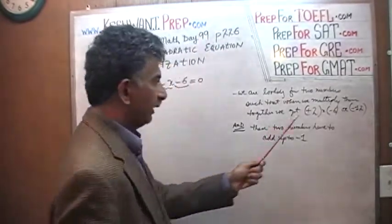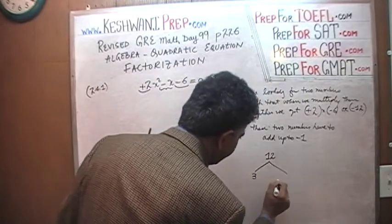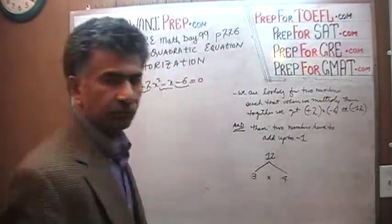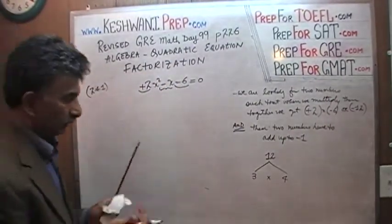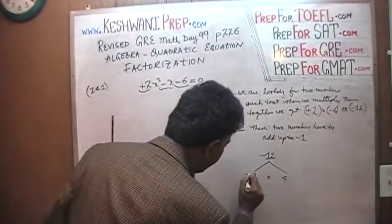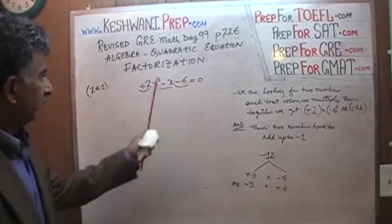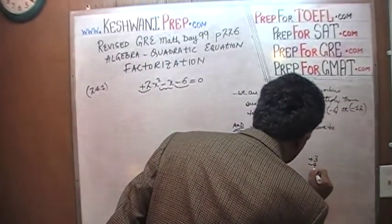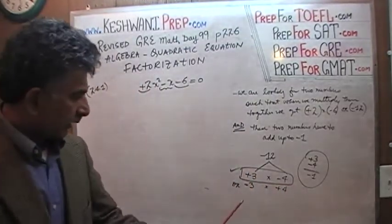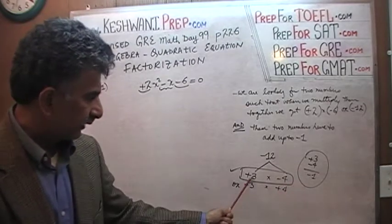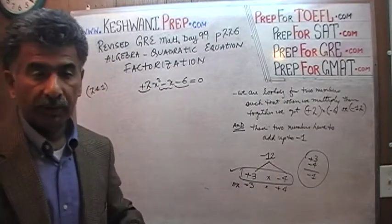We know that when we multiply the two numbers, we get twelve. One scenario that comes to mind is three and four, since three times four is twelve. But we need negative twelve, so there are two possibilities: positive three and negative four, or negative three and positive four. Positive three plus negative four equals negative one — that works! Negative three plus positive four would give positive one, and we need negative one. So positive three and negative four are our two factors.